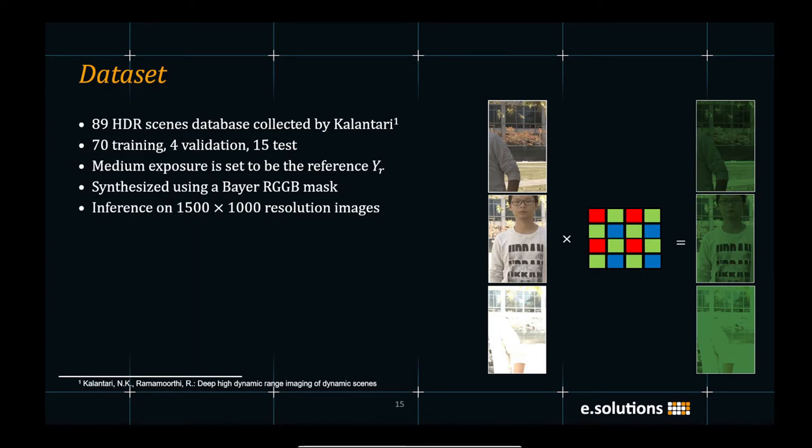The medium exposure input is set to be the reference exposure. In order to generate the raw inputs for our model, we synthesize the original low dynamic scenes using a Bayer RGB mask as shown in the figure on the right. We perform the inference on the full resolution 1500 by 1000 pixel images from the scene.